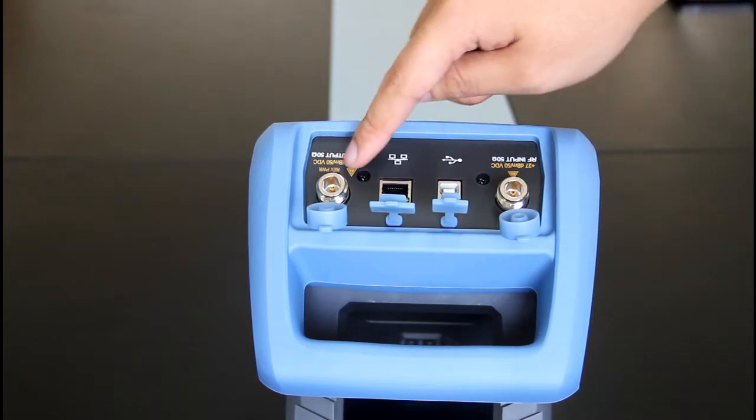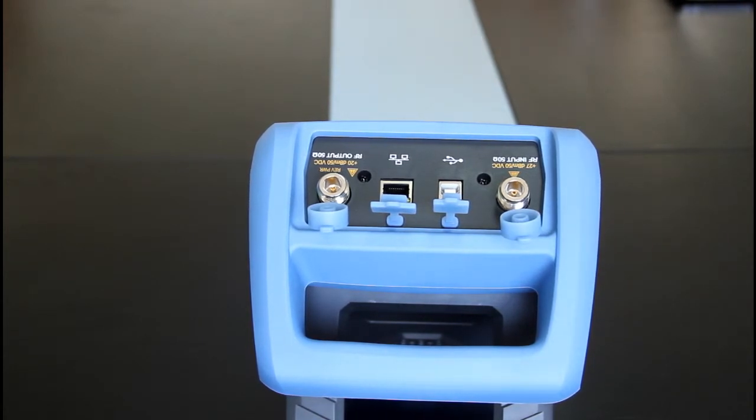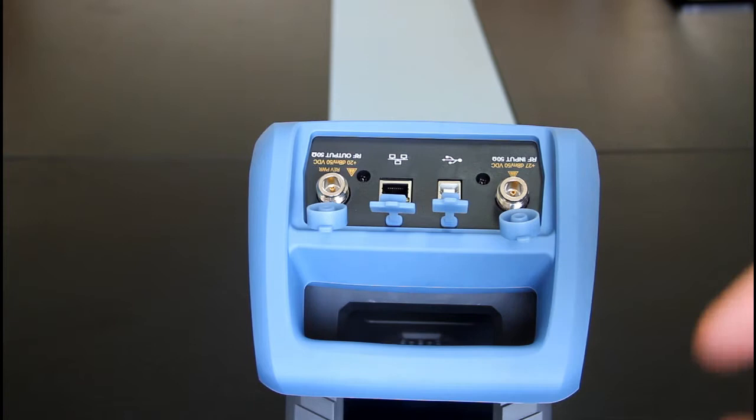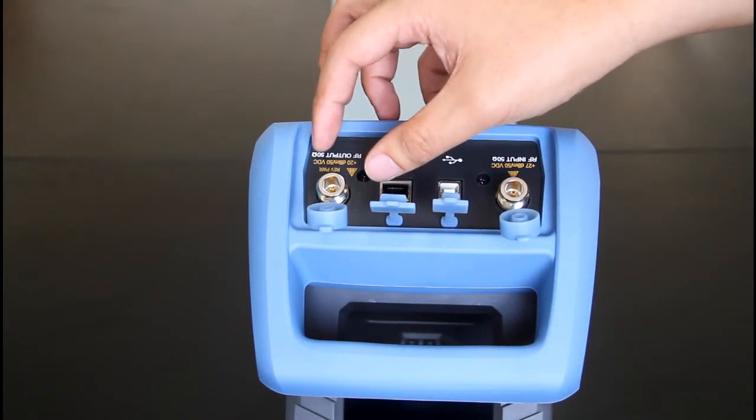The first one is an N-type female interface. This is the RF output interface. If you selected the option tracking source or CW source, this is acting as a signal generator.